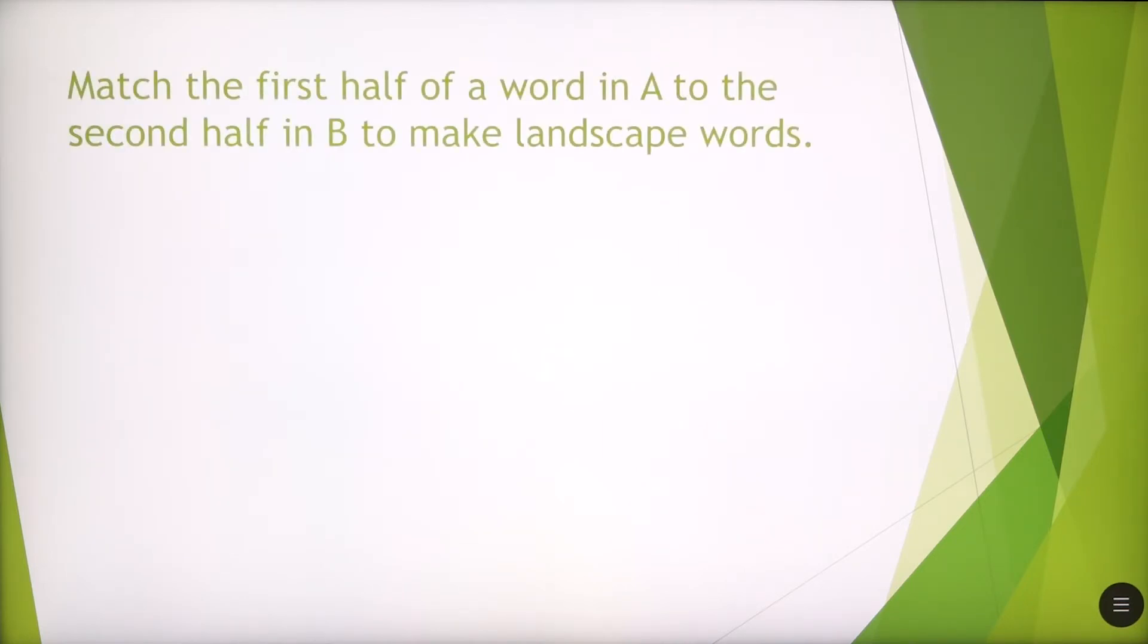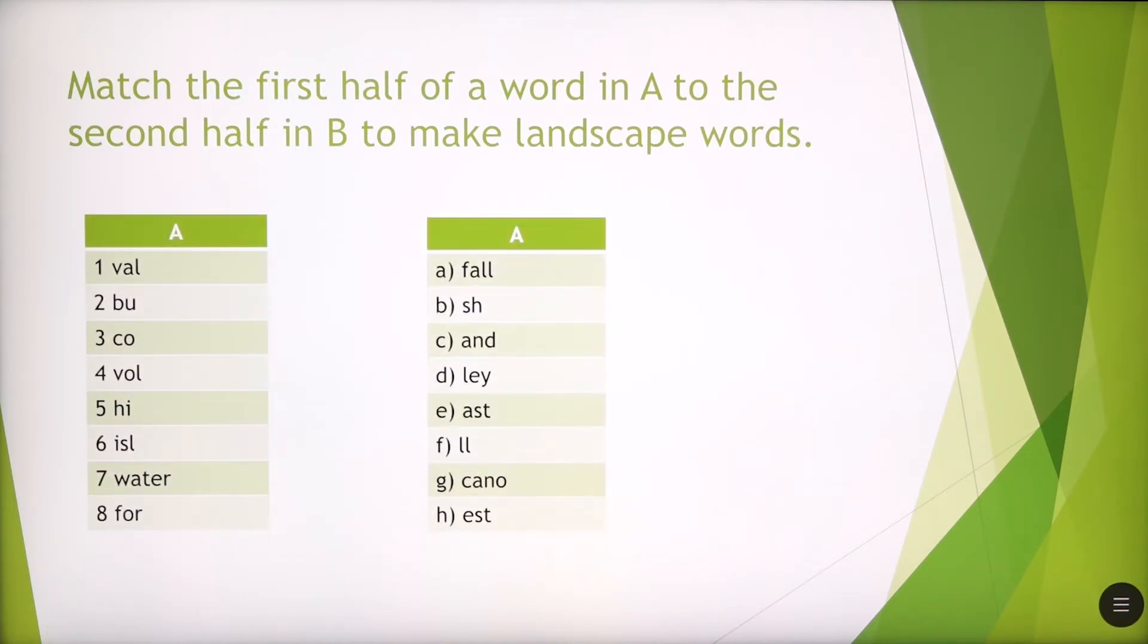Match the first half of a word in A to the second half in B to make landscape words. So as you can see, the words are divided into parts. You have to combine the missing parts, the other part. So let's try to find number one, which is its missing syllable. One goes with valley. What would you say for number two? It's bush. Number three, coast. Number four, volcano.